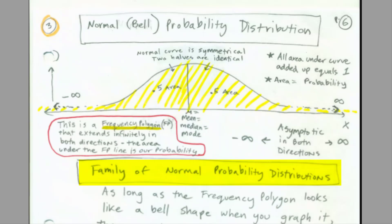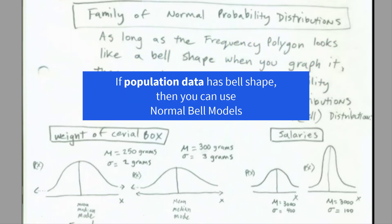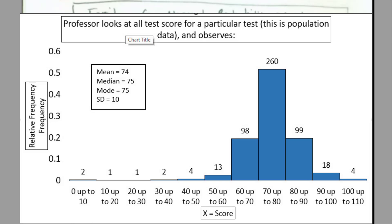There's actually a family of normal probability distributions. As long as you plot the frequency polygon or histograms and it looks Bell-shaped, then that's the shape of your distribution. You can use the models we're going to learn in this video and chapter if the population data has this Bell or normal shape. Later we'll learn about the central limit theorem for samples. For now, it's all about the population data — cereal box weight from a manufacturing filling machine, bags of lettuce, salaries, and sometimes test scoring situations tend to be Bell-shaped.